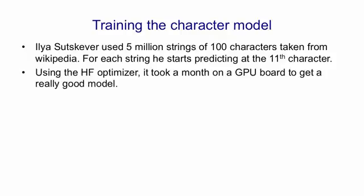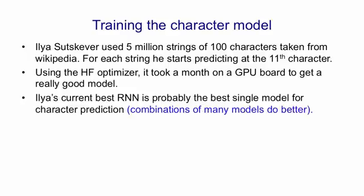He used the Hessian Free Optimizer, and it took about a month on a very fast GPU board to get a really good model. His current best recurrent neural network for character prediction is probably the best single model there is for predicting characters.